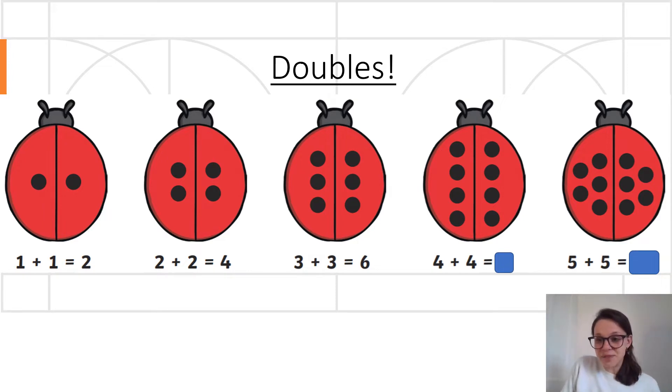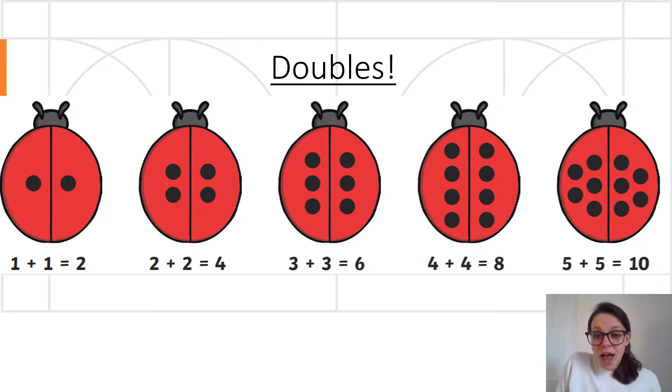Let's show the answers then. So four add four is eight and five add five is ten. We know that those are all even numbers. That means that they can be split equally in half. Well done for remembering your doubles year one. Let's move on.